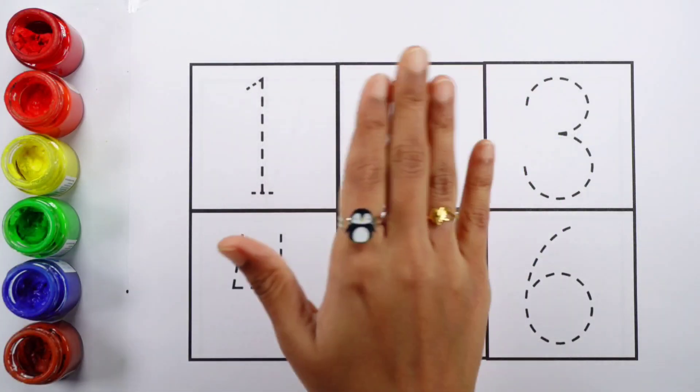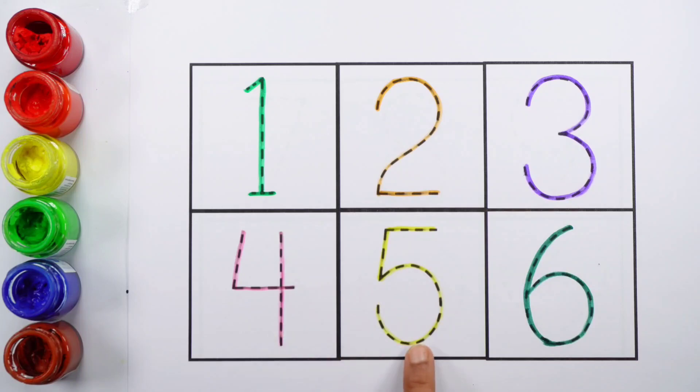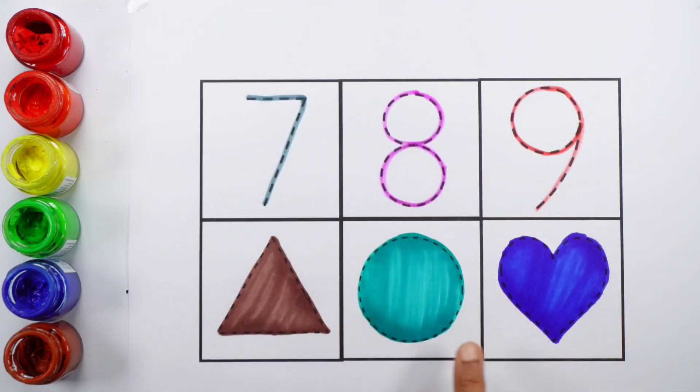Hello guys. One, two, three, four, five, six, seven, eight, nine. Triangle, circle, heart.